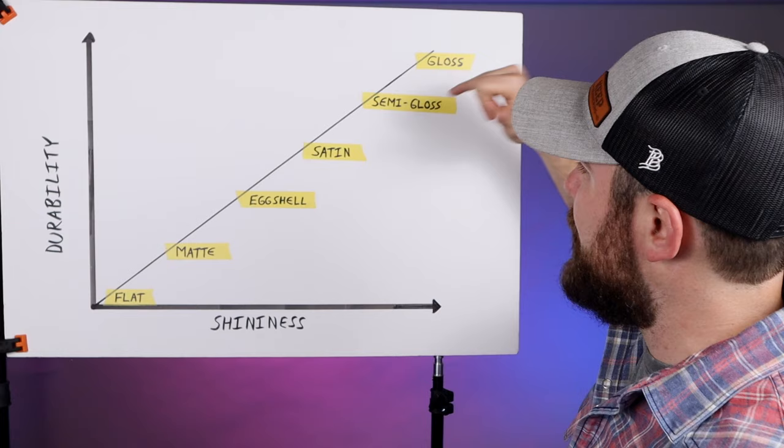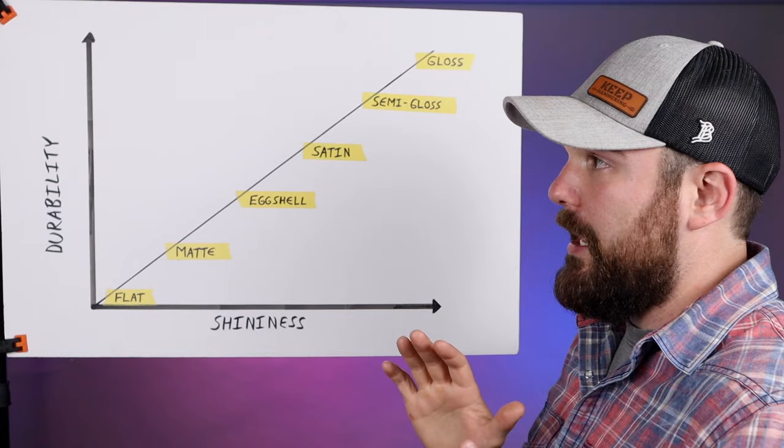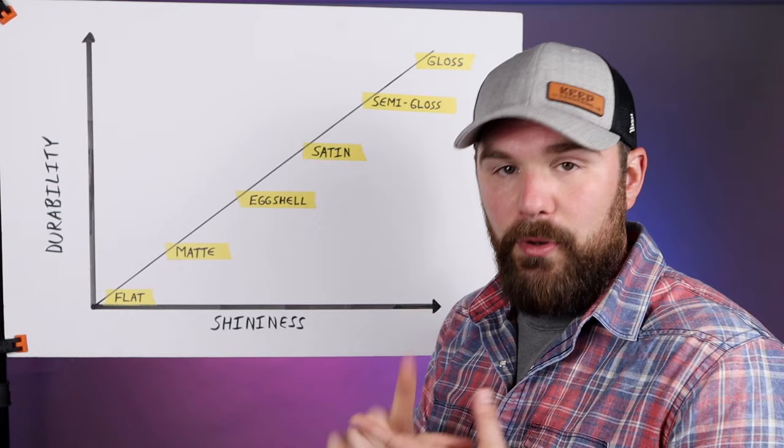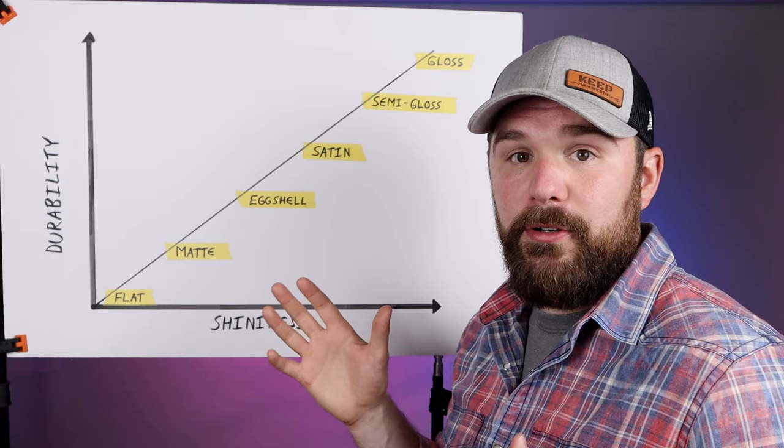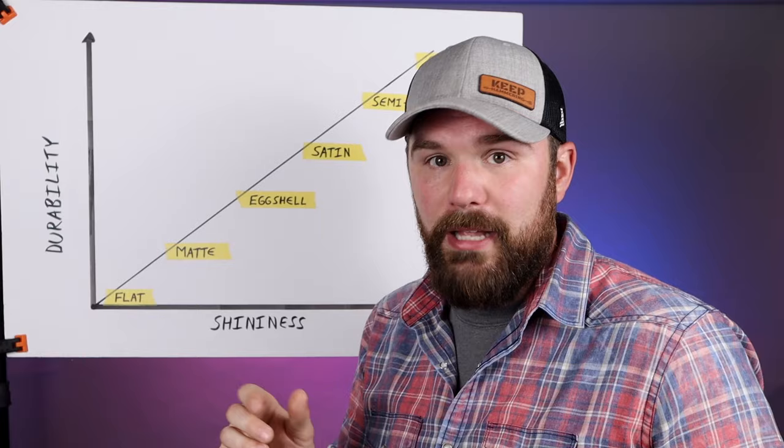Semi-gloss is the most common sheen that you're going to see on trim. I would say in our residential clients, it's the number one preferred finish people like on their doors, and when I say trim I mean window casings, door frames, baseboards, chair rail molding, crown molding, any of the woodwork. The reason you use a semi-gloss on trim is because a lot of times trim is in a high traffic area, so doors get touched a lot, baseboards get touched a lot, chair rail and all that stuff.